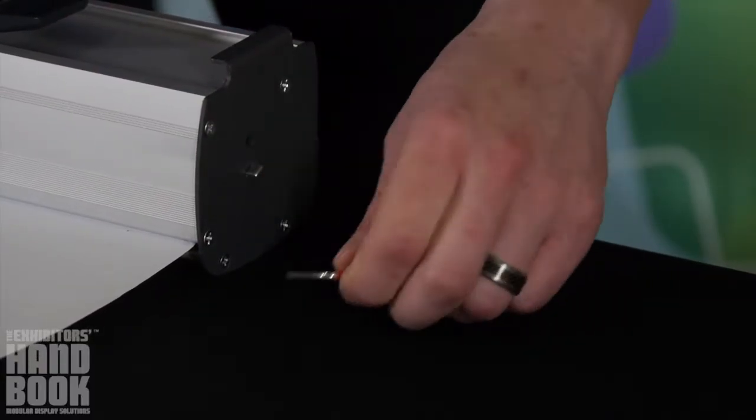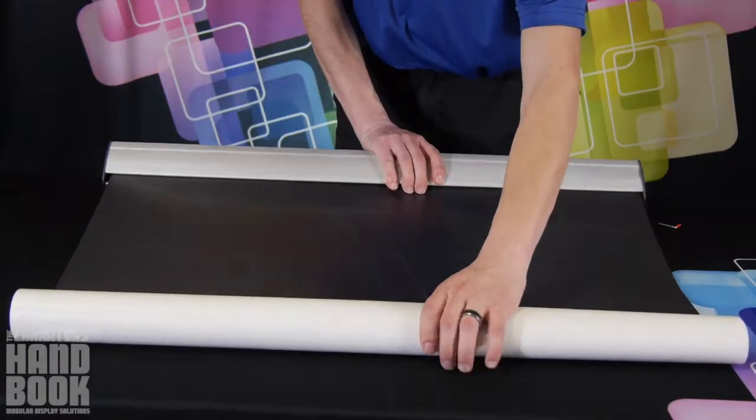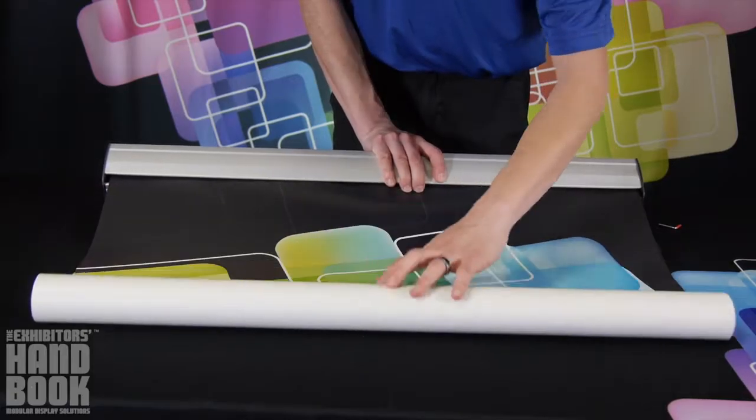Grasp the rolled graphic firmly and remove the pin from the left side of the base. Slowly feed your graphic into the stand.